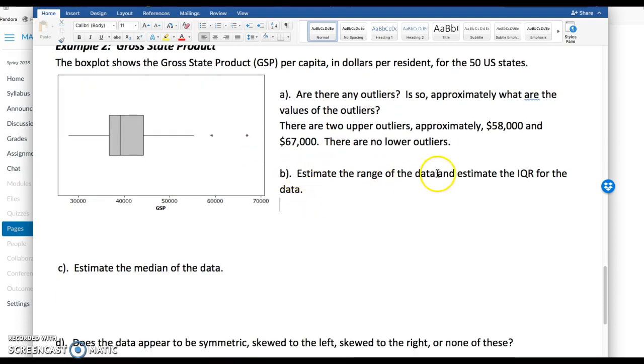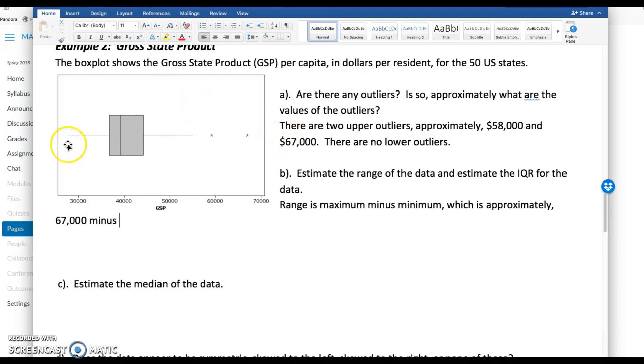I'm going to need to estimate the range and the IQR. So the range is maximum minus minimum, which is approximately for this set, we're going to that max, 67,000 minus, and the lowest value. This is definitely an approximation. Down here, maybe 20,000, 18,000, 20,000. We get a range of about, I want to say about approximately because we don't know for sure, 47,000 GSP.